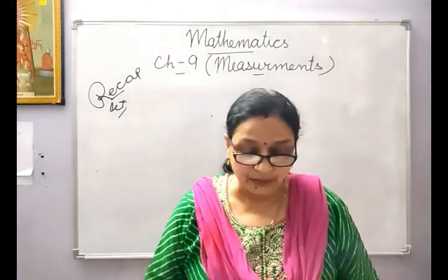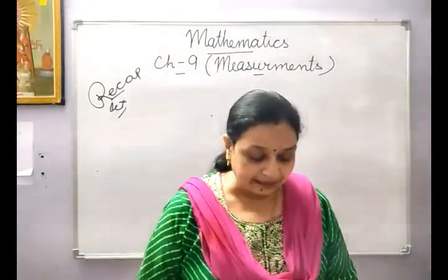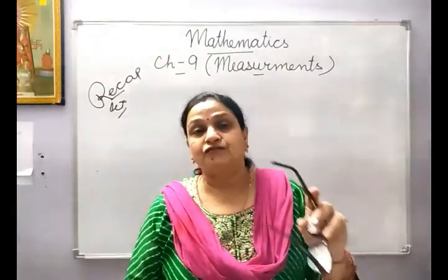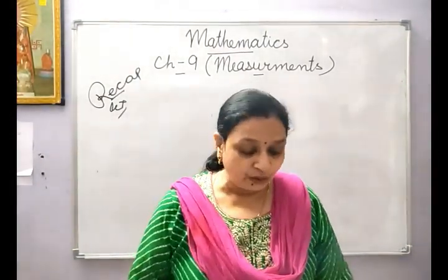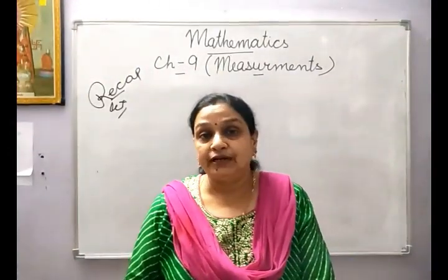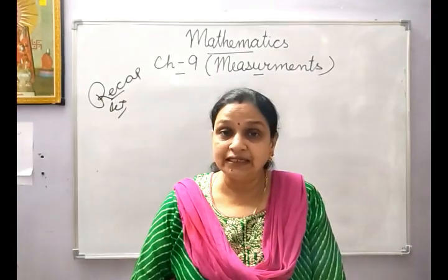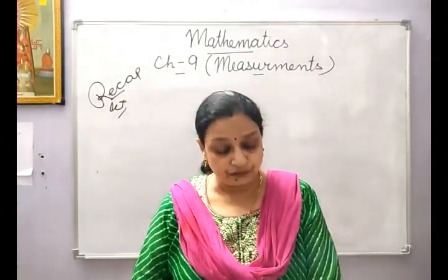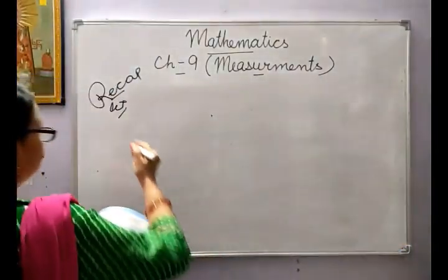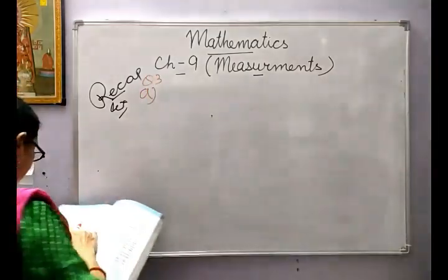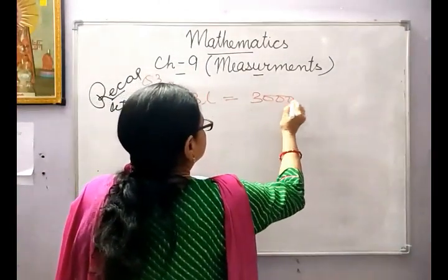In this, one packet of milk contains 250 millilitres. You are dropping them into one bigger container of 3 litres capacity. For this, in these types of sums, please make the sums in the same unit. The milk in the packet is in millilitres and capacity is 3 litres, so we convert 3 litres into millilitres: 3 litres equals 3000 millilitres.